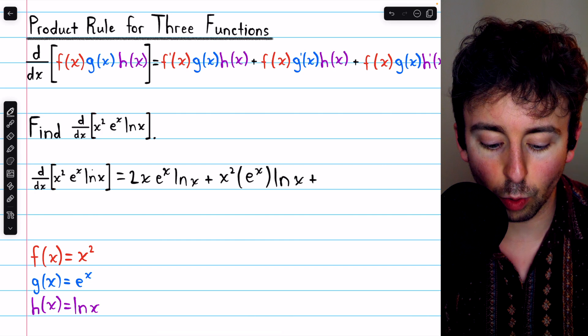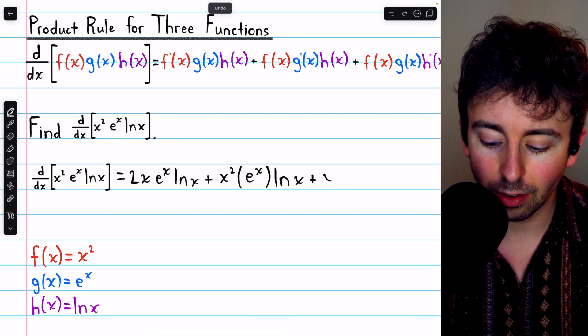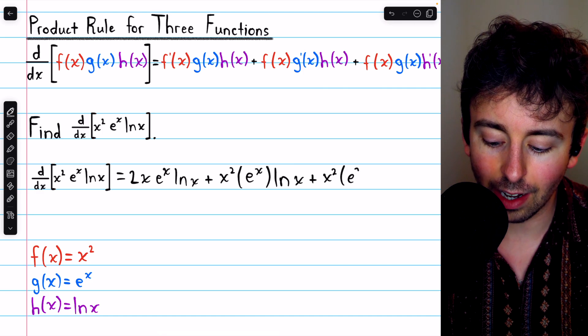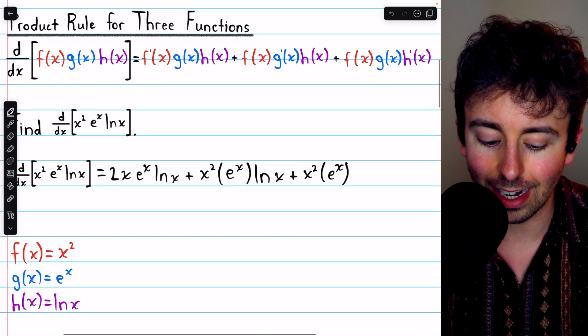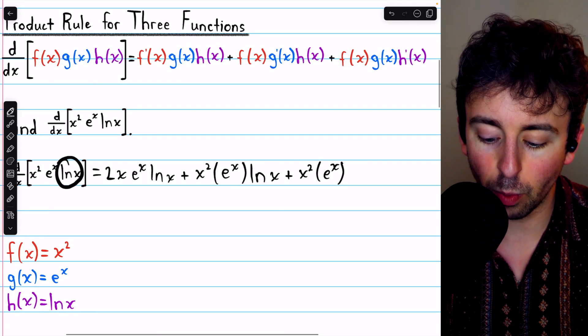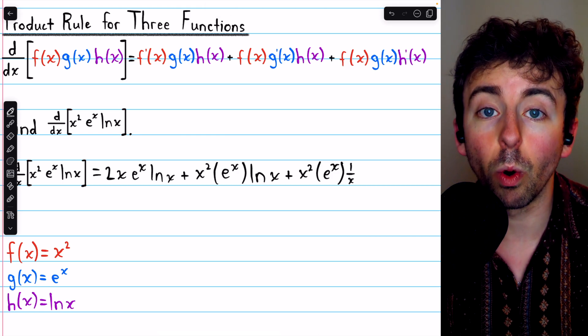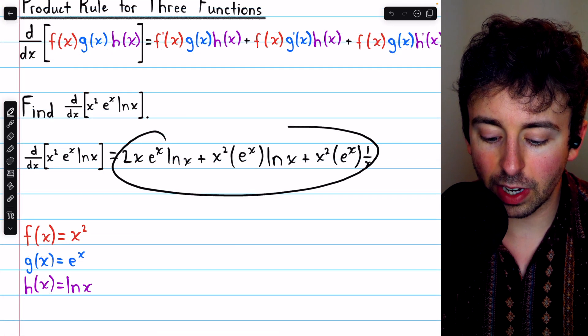Now in the third term, we'll take the derivative of the third function. So the first function is not going to change, just x squared. The second function is not going to change, just e to the x. But the third function, we're going to take the derivative of that. And the derivative of ln x is 1 over x. So this is our derivative.